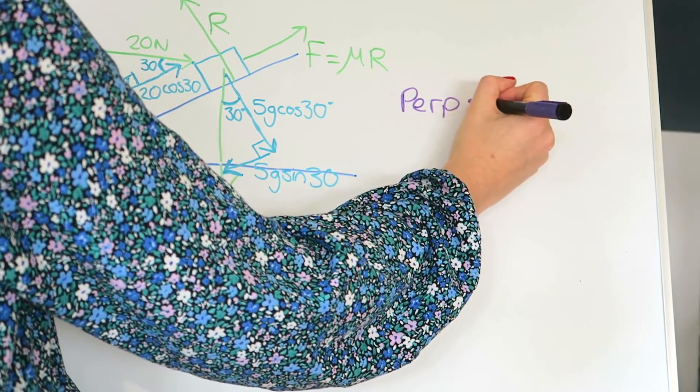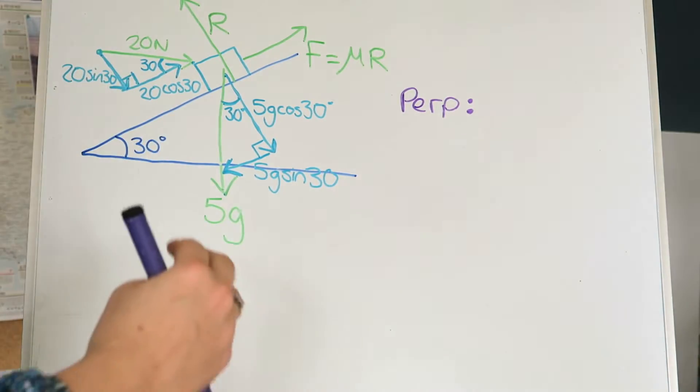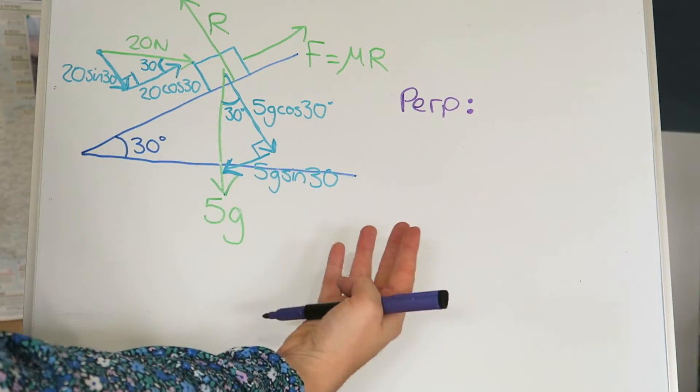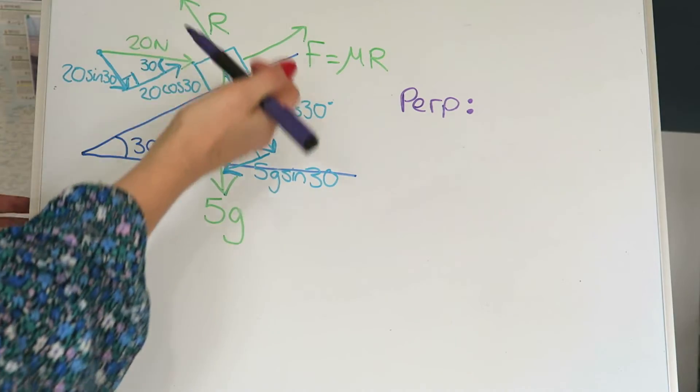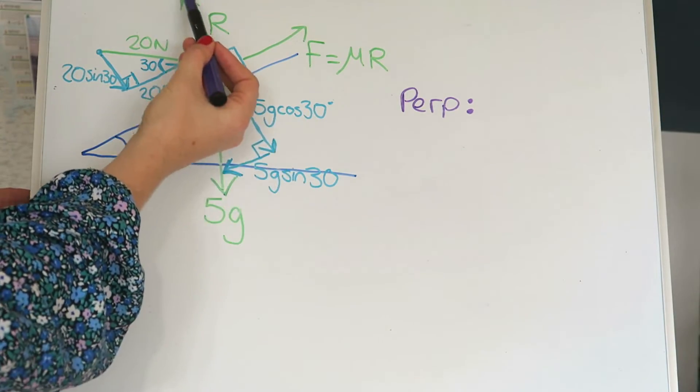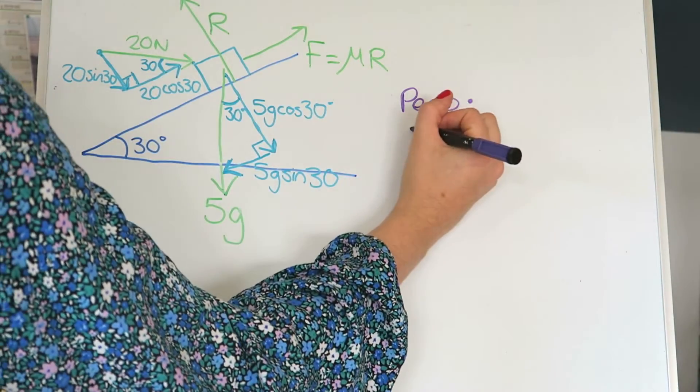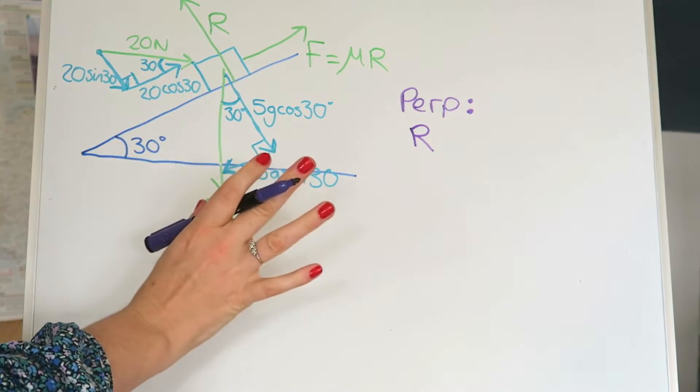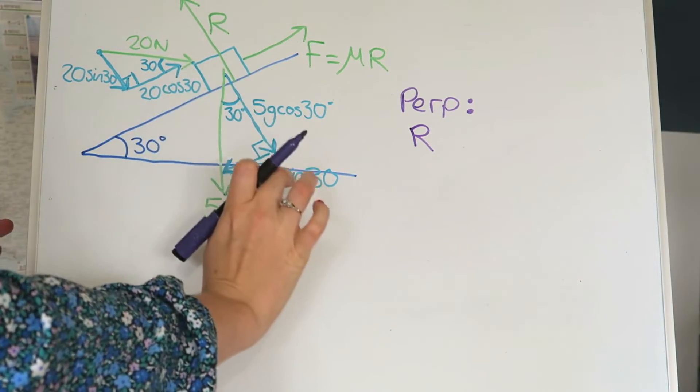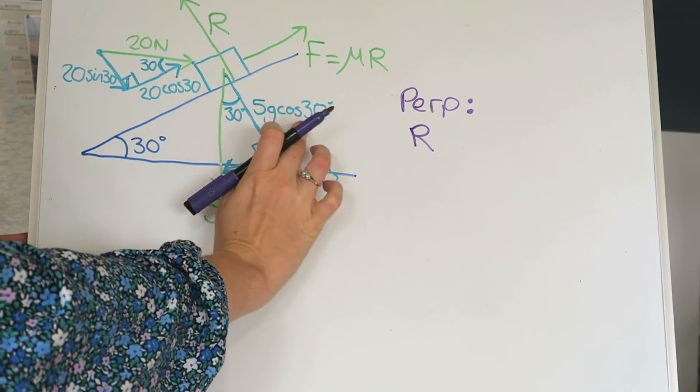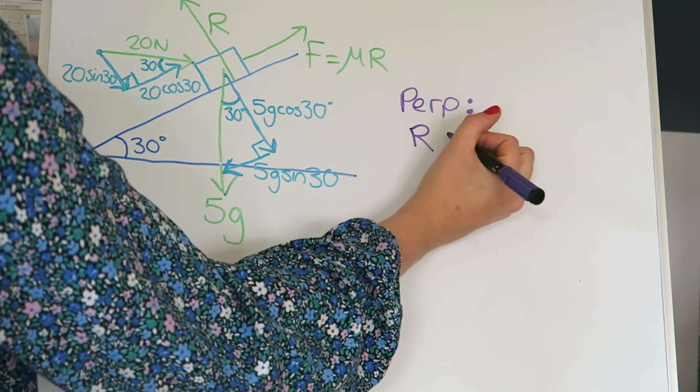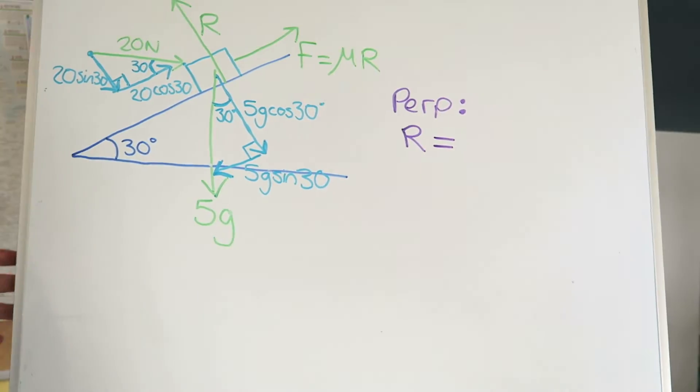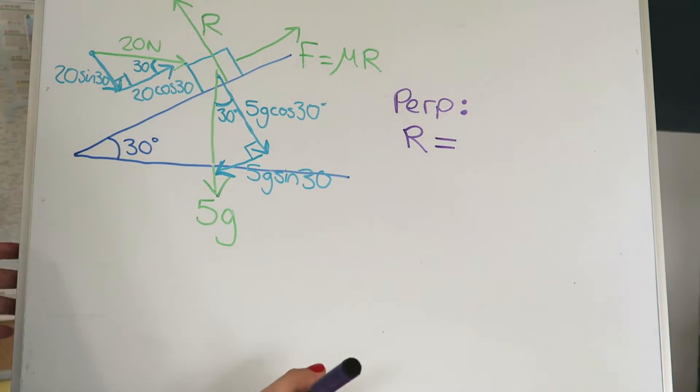Let's do perpendicular first, but it doesn't matter which order you do this in really. I'm going to write perpendicular. So because it's in equilibrium, the forces up perpendicular equal the forces down. So what forces do we have up perpendicular? We've got this R, the reactive force, and that's all. And then the forces down, we've got this one here, 5g cos 30, and we've also got this one here, 20 sine 30.